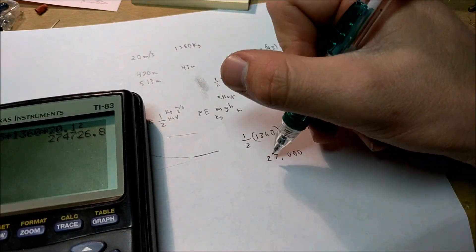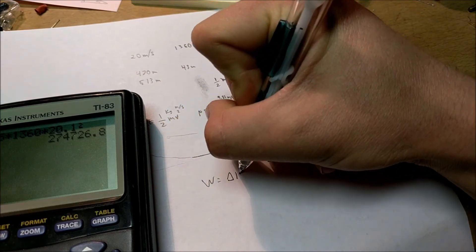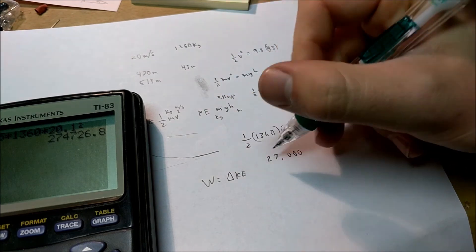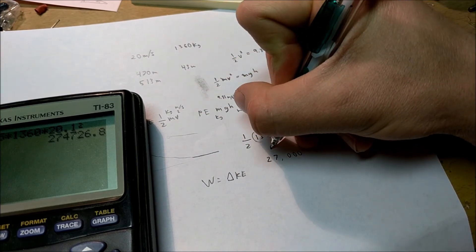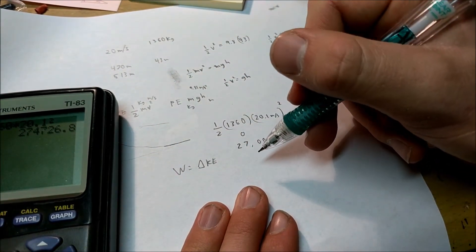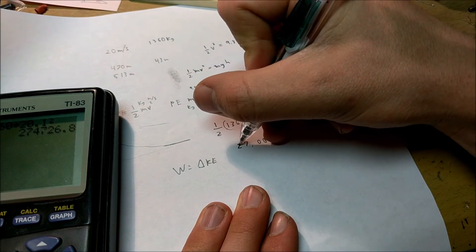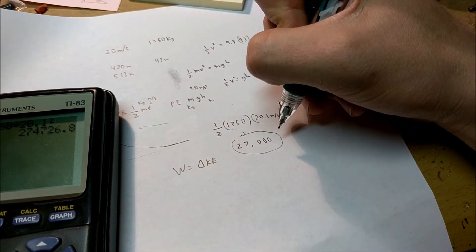Now, work is the change in kinetic energy. So we know that it started at the kinetic energy of zero because the velocity was zero and it went to 27,000. So we know that the work that was done on the truck by gravity was approximately 27,000 joules. And that's pretty cool.